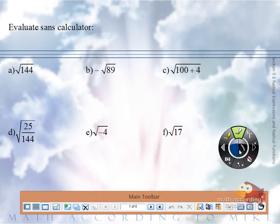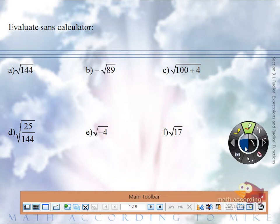So in all of these problems, you're going to tell me what number squared gives you the radicand. So what number squared gives you 144?